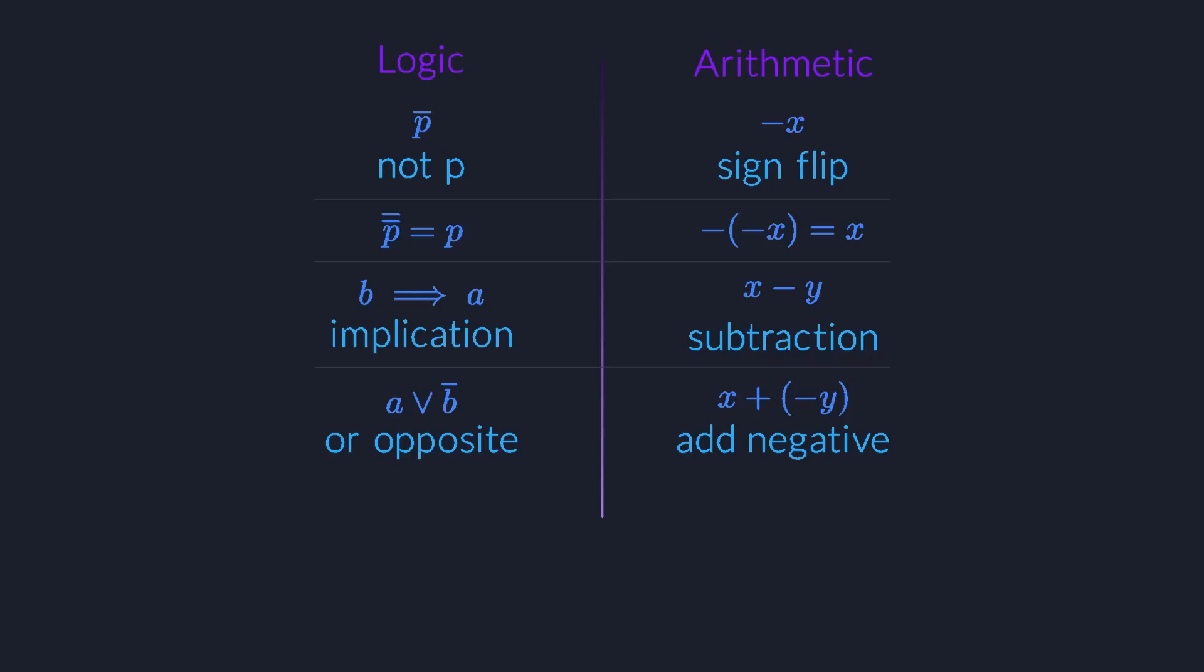The arrow is meant to evoke the feeling that whenever you find yourself at b, you can safely proceed to a. In a mathematical proof, this means that you can derive a from b.